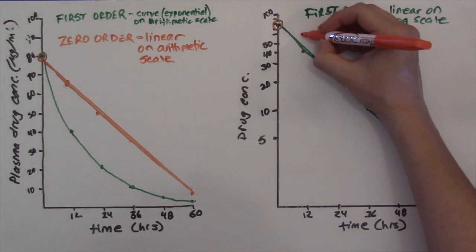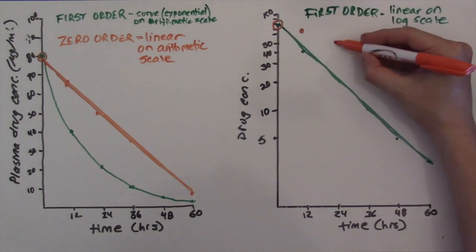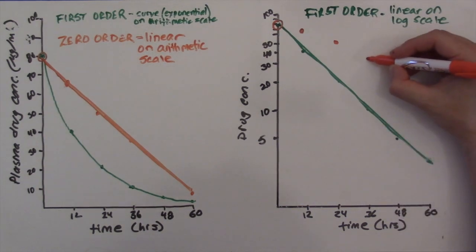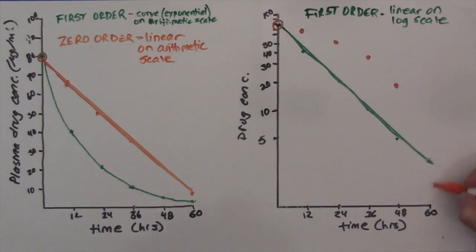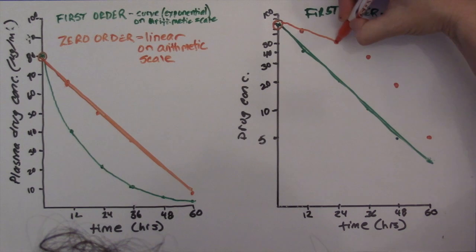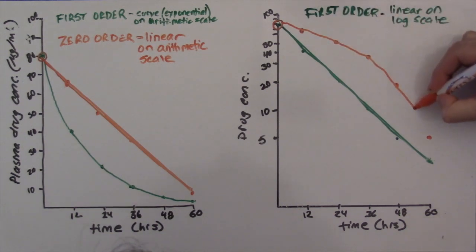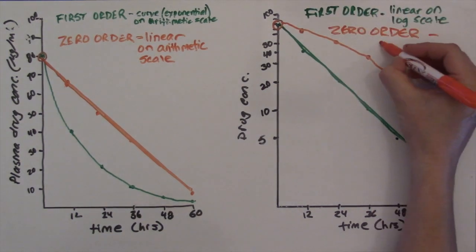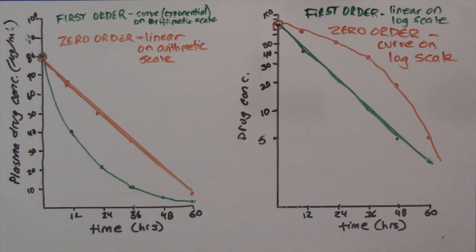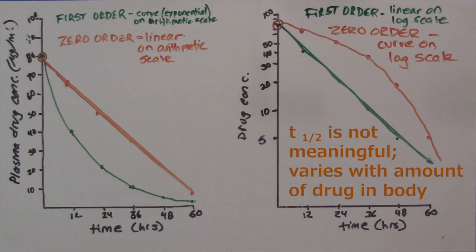But if we plot the same data on a logarithmic scale, we get a curved line that doesn't change much until the concentration remaining in the body is really low. Importantly, we can't really calculate a half-life for a drug undergoing zero-order kinetics, because the time it takes to eliminate half of the drug depends on how much drug is in the body. So half-life isn't very meaningful.